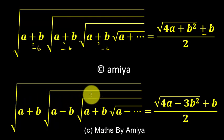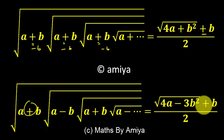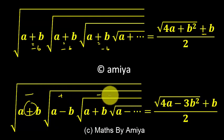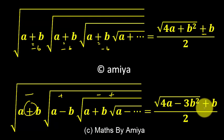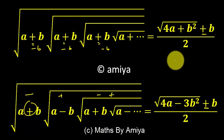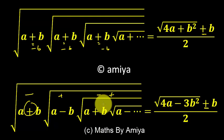Similarly, if you have plus, minus, plus, minus with the first sign being plus, the formula uses plus b. If it is minus, plus, minus, plus — alternate sign starting with minus — the formula is under root of (4a minus 3b)². If we place minus b, the b squared term is unaffected, but the linear b term becomes minus. Please note down this formula and use it in your examination.